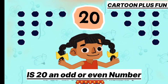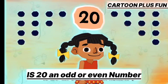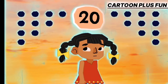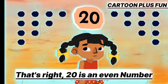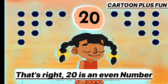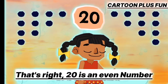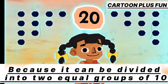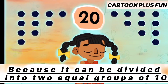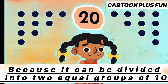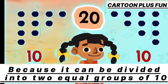Is 20 an odd or even number? That's right! 20 is an even number because it can be divided into 2 equal groups of 10.